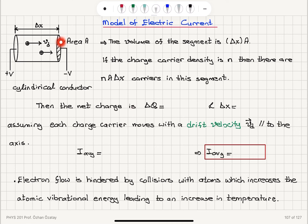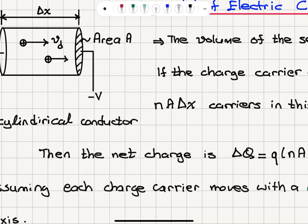What is the net charge that is flowing through this segment of the conductor? It's the number of carriers multiplied by the charge of each carrier. Let's say that each charge carrier carries a charge Q, and the number of charges is N·A multiplied with delta x. The distance traveled by these charges, delta x, inside this segment, is the drift velocity Vd multiplied by the time it takes, delta t. This assumes that each charge carrier moves with a drift velocity Vd that is parallel to the flow axis.